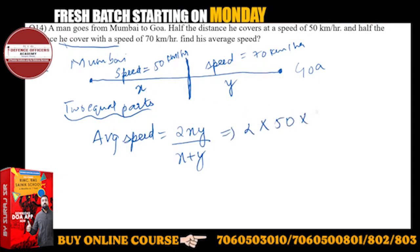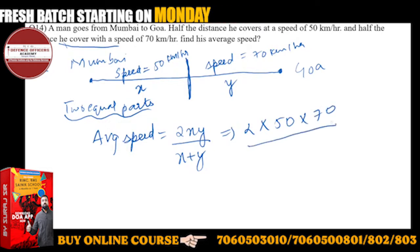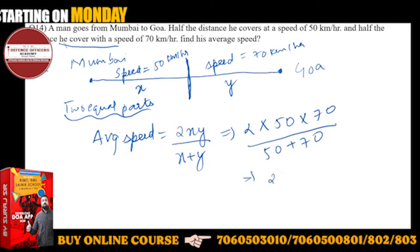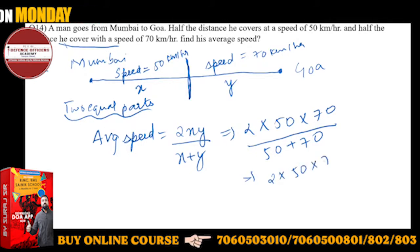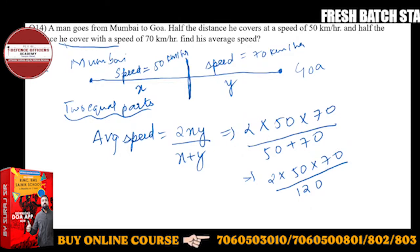50 into Y. Y is 70 upon X plus Y, which is 50 plus 70. So this will be 2 into 50 into 70 upon 120. So what is the answer? You can cancel 0 with 0.